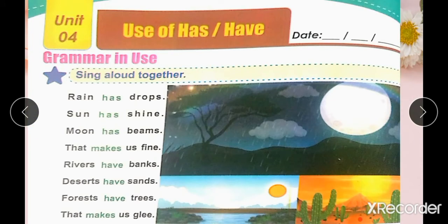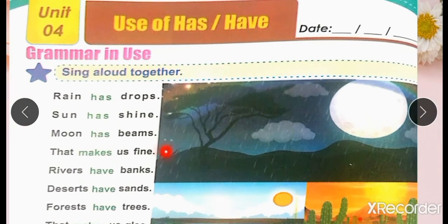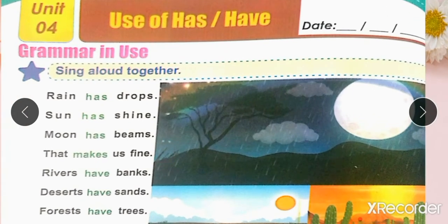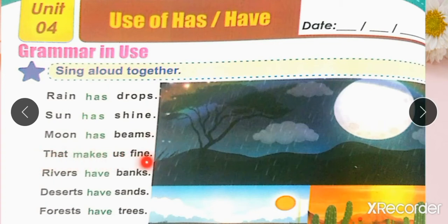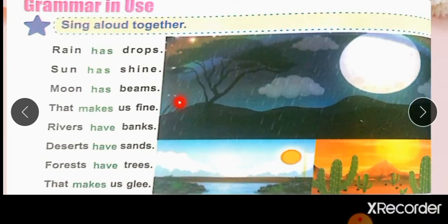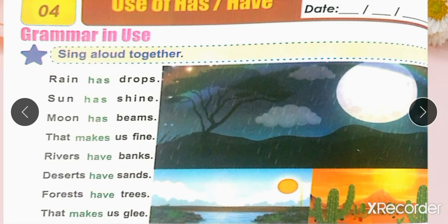First we will read the poem. Sing aloud with me: Rain has drops, sun has shine, moon has beams that makes us fine. Rivers have banks, deserts have sands, forests have trees that makes us glee. I hope you have sung with me, students.